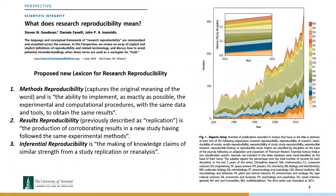They coined 'results reproducibility' — previously described as replication — the production of corroborating results in a new study having followed the same experimental methods. Their third category is 'inferential reproducibility': making knowledge claims of similar strength from a study replication or reanalysis. They searched Scopus and found that interest in research reproducibility has really spiked in the last 10–15 years across many scientific disciplines.